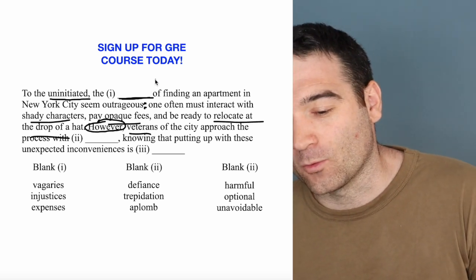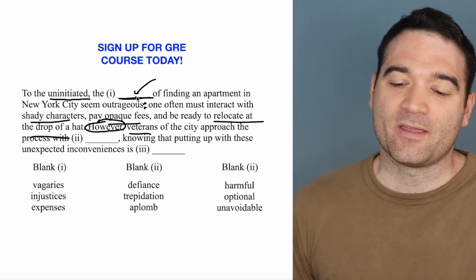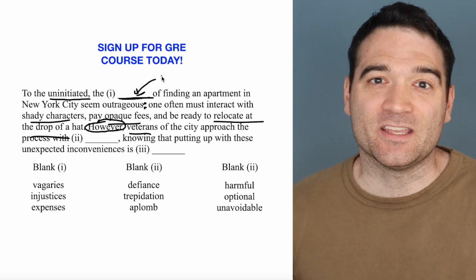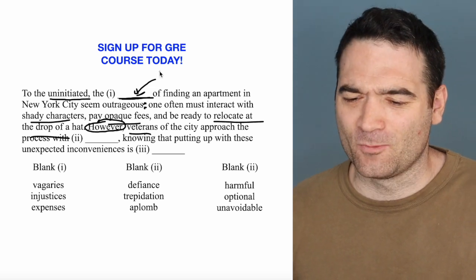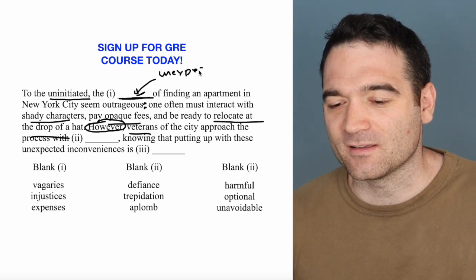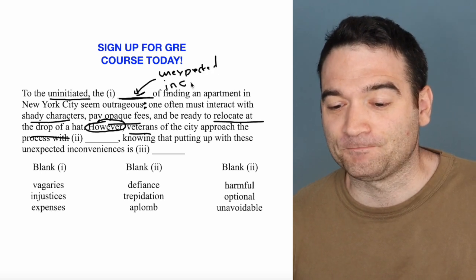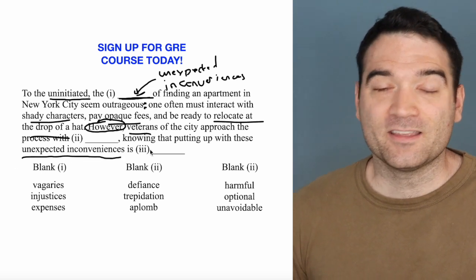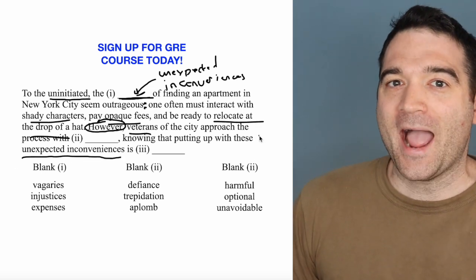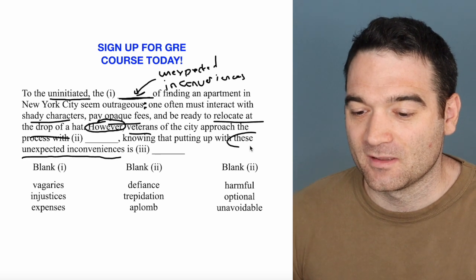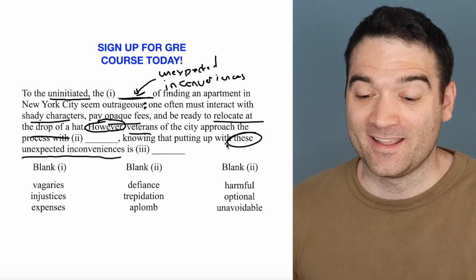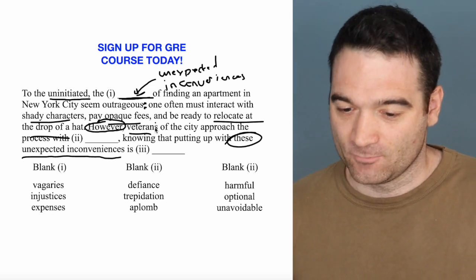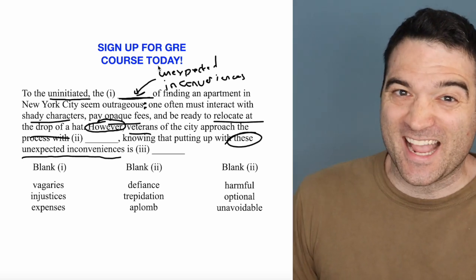What kind of word or words would best describe that? I'm going to throw one idea out: 'unexpected inconveniences.' Where did that come from? I got it from later in the sentence — right down here. This is a really key point: they will refer back to a concept sometimes, and it's very important to notice when they do that. This later part of the sentence describes these unexpected inconveniences, referring back to the first blank. So 'unexpected inconveniences' is exactly what we're looking for.